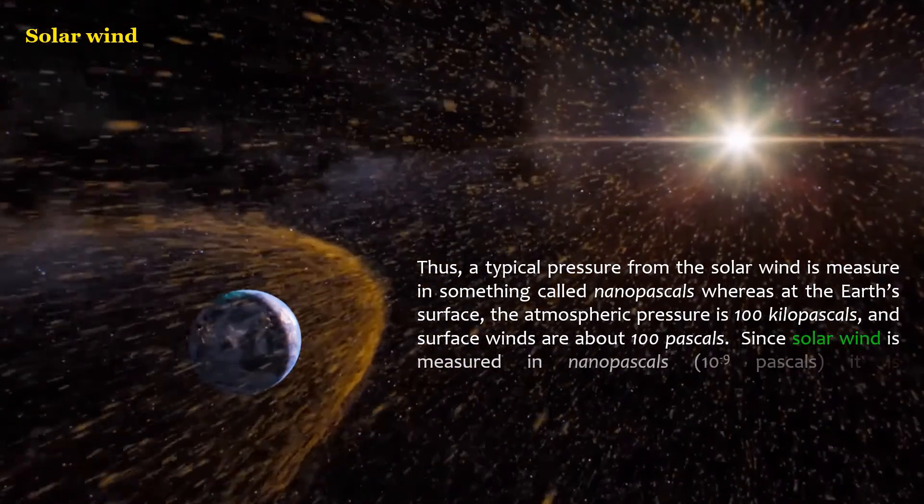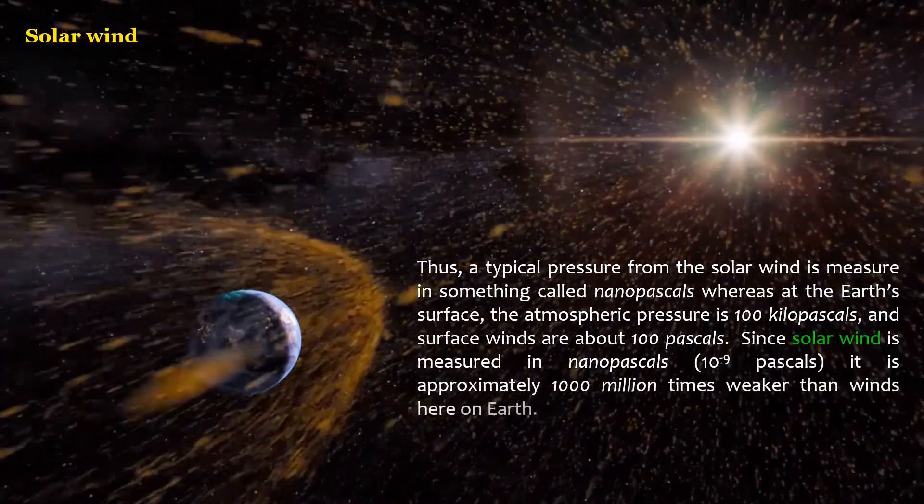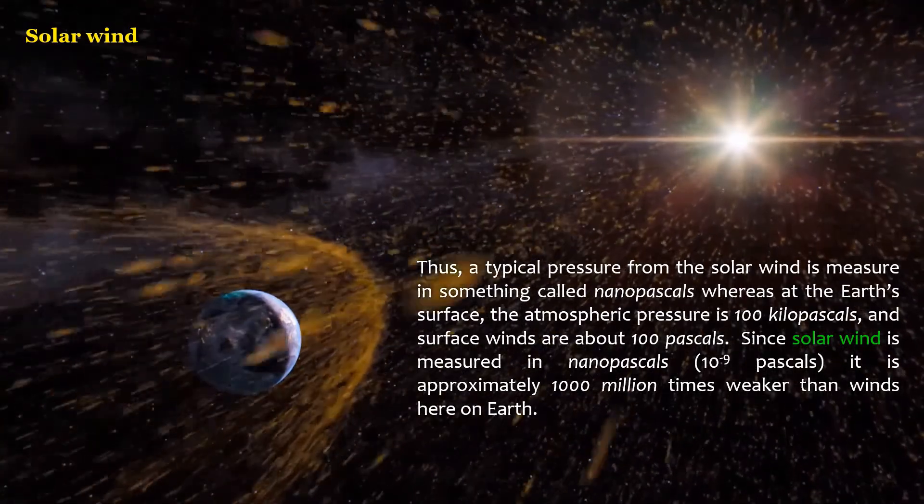Since solar wind is measured in nanopascals, 10 to the power minus 9 pascals, it is approximately 1,000 million times weaker than winds here on Earth.